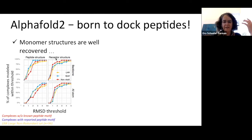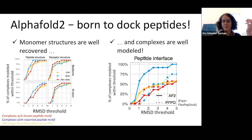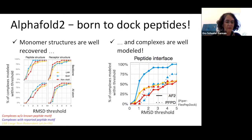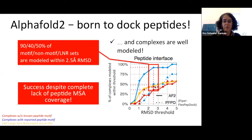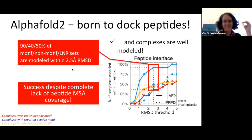Looking at the full dataset: 75% of the motif-set cases have the peptide structure modeled within 3 Å full-atom RMSD. More importantly, for the interface RMSD — modeling both peptide and receptor at the interface — between 40% and 90% of cases are modeled within 2.5 Å interface RMSD depending on the dataset. This is very good, especially considering there is complete lack of peptide MSA coverage, indicating that something other than co-evolutionary information is driving these predictions.